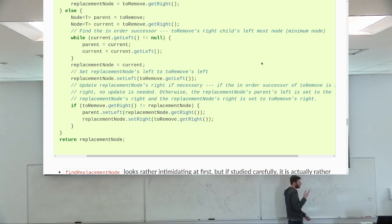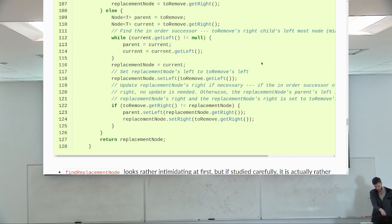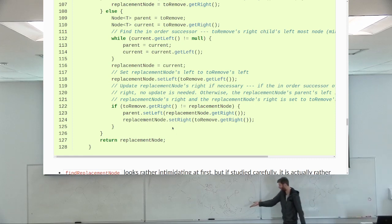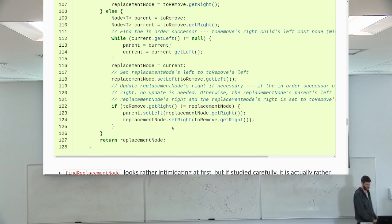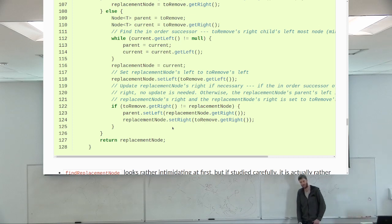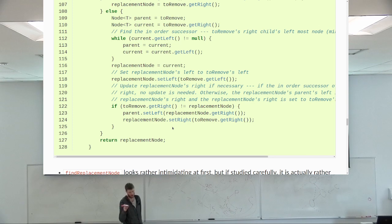At the end, we return the replacement node. This method has a side effect — it returns the replacement node, but it also modifies the structure of the tree, so be aware of that. Any questions? If you understood it clearly, fantastic. If you followed along but need to look again later, do that. If you didn't understand it at all, look later harder, because this is important stuff.